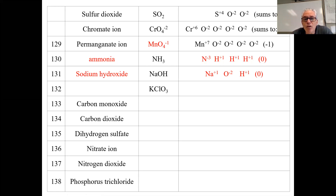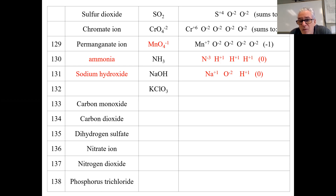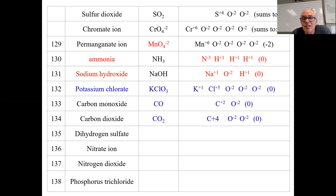Sodium hydroxide: sodium is a positive one ion — when it's a metal it's got to be positive one. Oxygen has a negative two oxidation number and hydrogen has a positive one, and that sums to zero as well. KClO3 — potassium chlorate: potassium is plus one, each oxygen is negative two. In order for this to sum to zero, chlorine has to be a positive five — and that's possible. Chlorine has a positive five oxidation number.